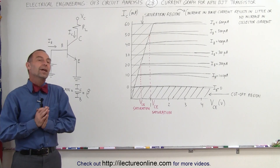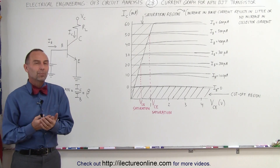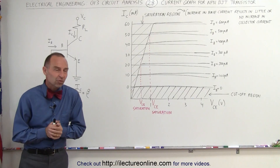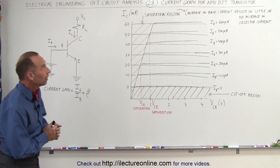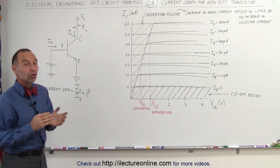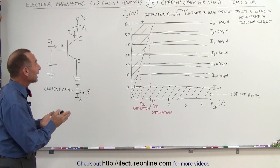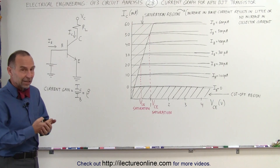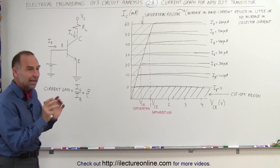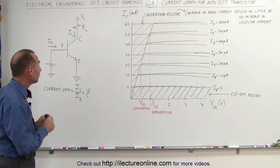Welcome to ElectronLine. Here we're going to look a little bit more into the BJT transistor, what we call the bipolar junction transistor, and in particular the NPN. N stands for negative, P stands for positive — it's how the semiconductor is doped.